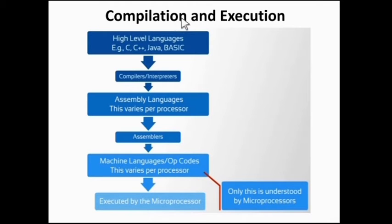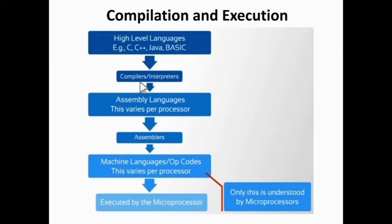Compilation and execution. Higher languages like C, C++, Java and Basic are converted into assembly level languages using compilers or interpreters. Higher level languages are closer to English and can be understood by humans. Assembly level languages are converted into machine level languages or opcodes using assemblers.